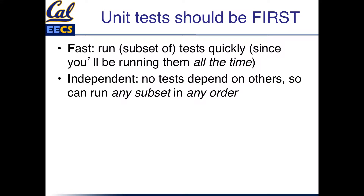Independent means that you can run any subset of the tests and expect them to work in isolation — there are no dependencies on the order in which different tests run. In a large application, even when the tests are running fast, it may be too costly to run the entire test suite every time you make a change. Having independent tests means you can run only the subset of tests that might be affected by your most recent code changes.